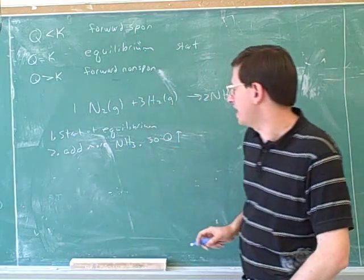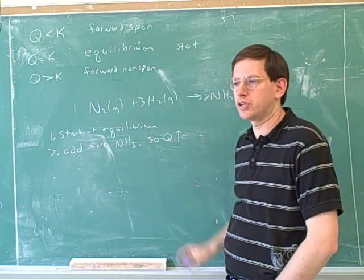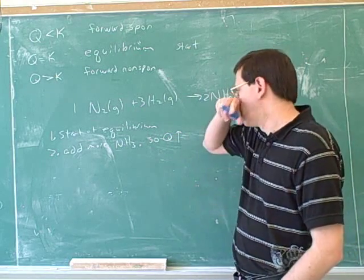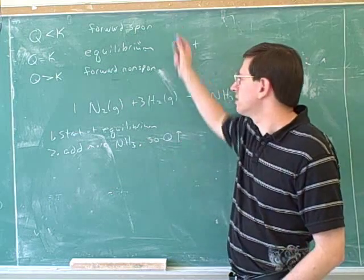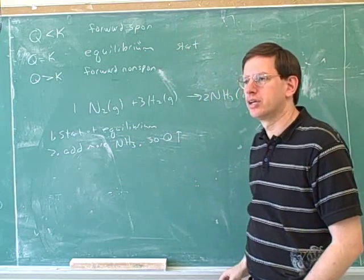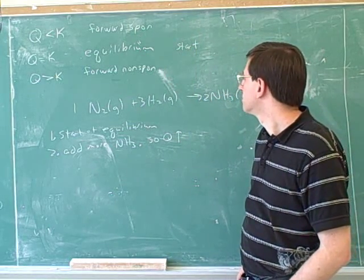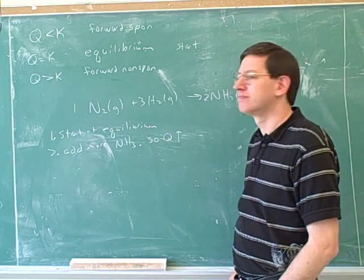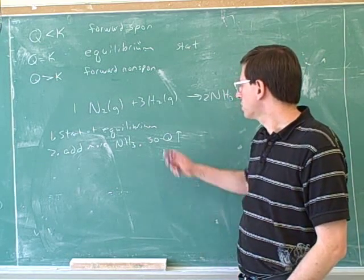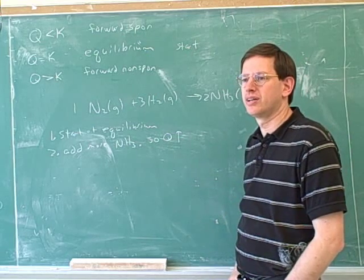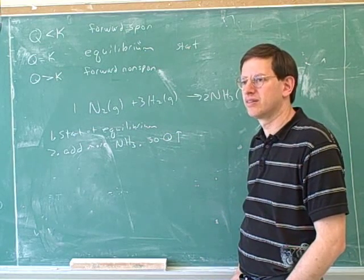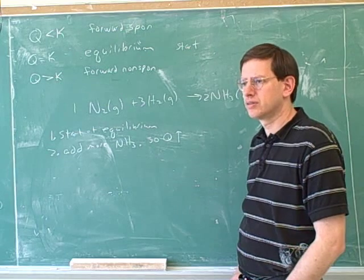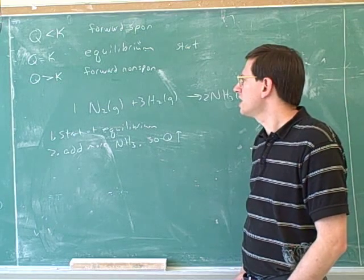Adding more product means that now, in a sense, we're further forward. So Q is increased. What row would we now be in for our chart? So Q has gotten bigger. If we're at equilibrium and then we increase the product, then we go reverse. So which row would we be in? The last one. Yeah.